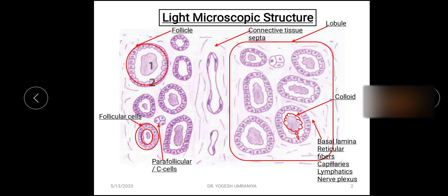There is a variation in the shape and size of the follicular cells according to the stage of activity, which we will see in the next slide. Apart from the follicular cells, the cavity situated within the follicle contains a secretory material termed the colloid. You can see the cavity of the follicle occupied by this colloid material.